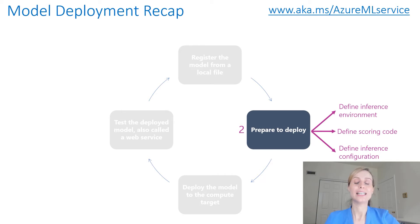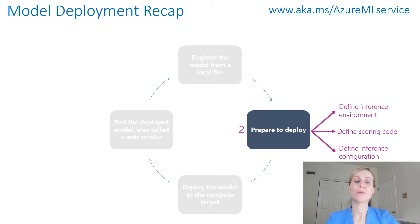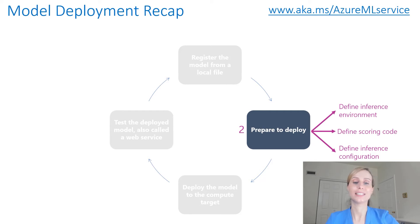The second step is about preparing to deploy your model. In order to deploy the model as a service, you need the following components. First of all, you need to define your inference environment — this environment encapsulates the dependencies required to run your model for inference. Then, you need to define the scoring code, which is a script that accepts a request, scores the request by using the model, and finally returns the results.